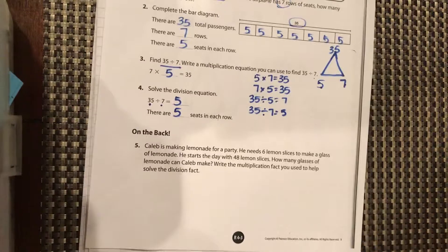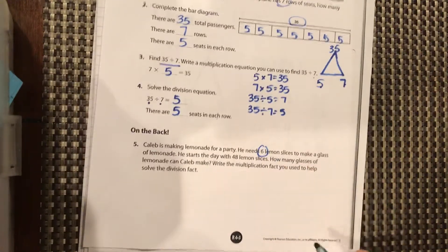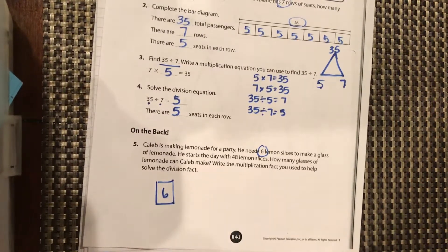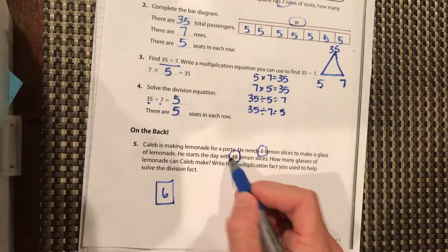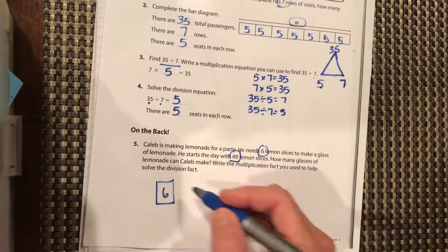Okay, Caleb is making lemonade for a party. He needs 6 lemon slices to make a glass of lemonade. So each glass of lemonade has 6 lemon slices in it. He starts out the day with a total of 48 lemon slices.